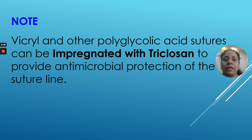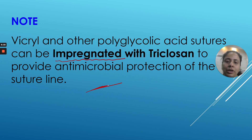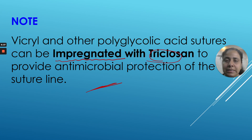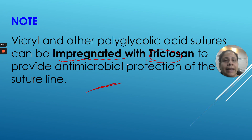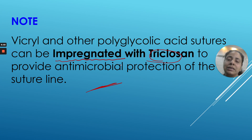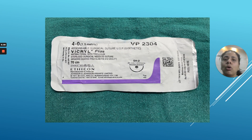Sometimes Vicryl and other polyglycolic acid sutures are impregnated — coated — with a layer of triclosan, which is an antibacterial substance also found in mouthwashes. Polyglycolic acid and Vicryl coated with triclosan are made resistant to bacterial infections, and that particular variant is called Vicryl Plus.